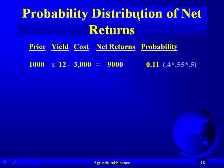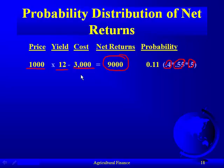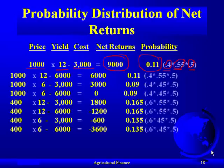We're basically creating information to find the probability distribution of net returns. We said we have eight states of nature. For the first state of nature: price is $1,000 with a 40% chance, yield is 12 metric tons with a 55% chance, and cost is $3,000 with a 50% chance. Net returns equal price times yield minus cost: 1,000 times 12 minus 3,000 gives us $9,000. We multiply the probabilities together to get the overall probability for that state of nature, and we do that for every state of nature.